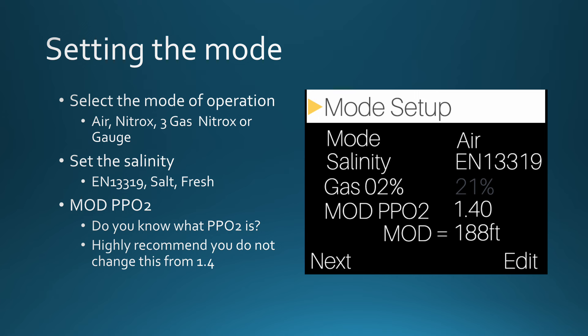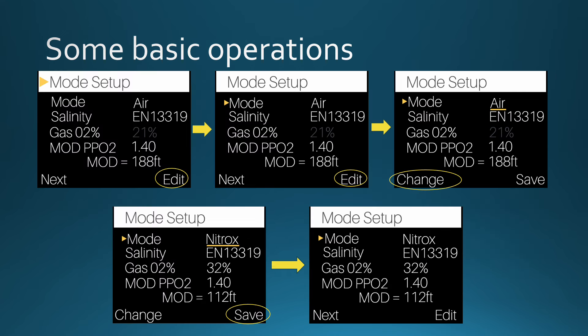You can also set the maximum operating depth and partial pressure oxygen. It is highly recommended that you keep your PPO2 at 1.4. Let's go through a quick example of how to change the mode. From the mode setup display, you'll notice two buttons labeled in the lower left — Next — and the lower right — Edit. When you press the Edit button, the yellow triangle cursor will move down to the mode menu item. When you select Edit again, the air selection is now underlined and your button selections change to Change and Save. When you press Change, nitrox is displayed as the mode, and when you hit Save, you have enabled nitrox mode.